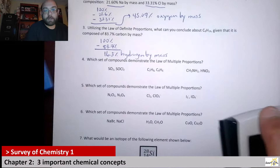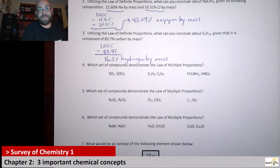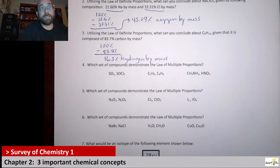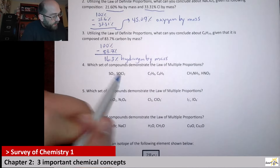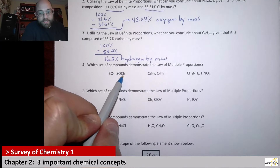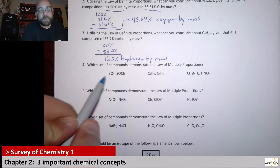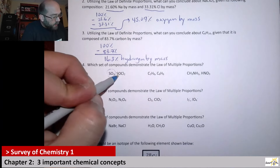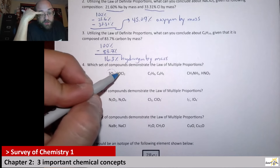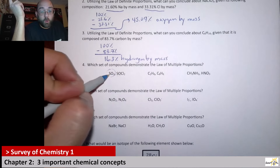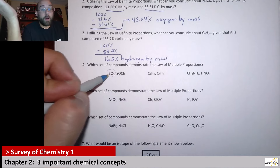Questions four through six look at the law of multiple proportions. In a nutshell, this law tells us that different elements can combine in different ratios. Looking at the first pair — SO2 and SOCl2 — this isn't really following the law of multiple proportions, because SO2 only has sulfur and oxygen while SOCl2 has a third element, chlorine. For the law to apply, the same set of elements must be present in both compounds.